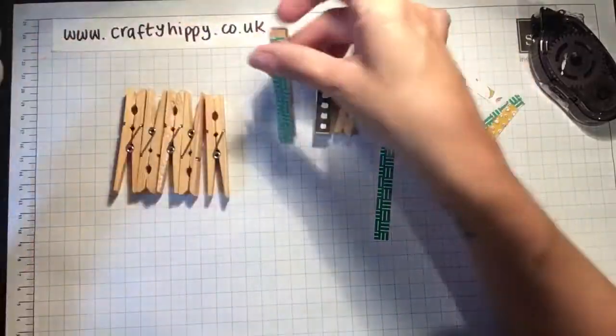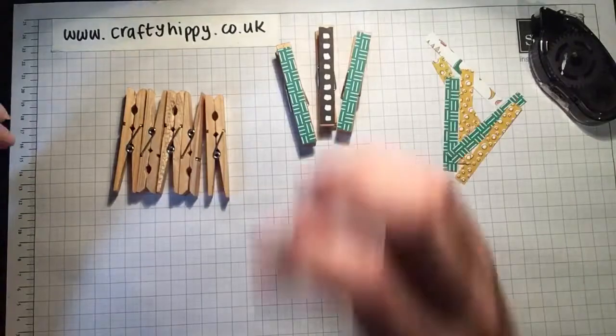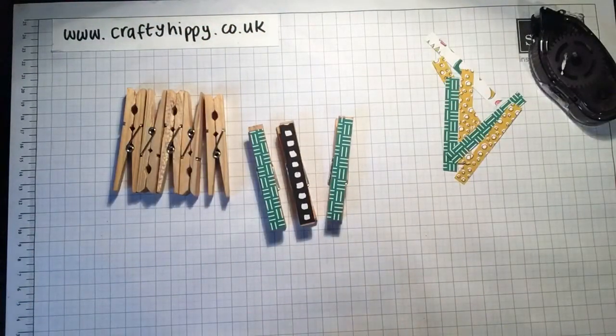Really simple, really quick, really easy. Use whatever colors you like, whatever paper you like. And there you have it, how to jazz up ordinary wooden pegs. Thanks for watching. Bye.